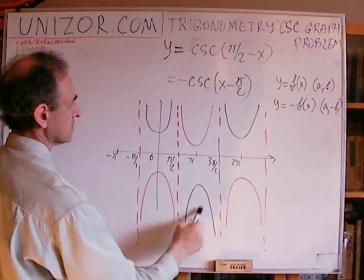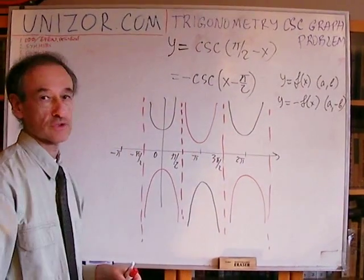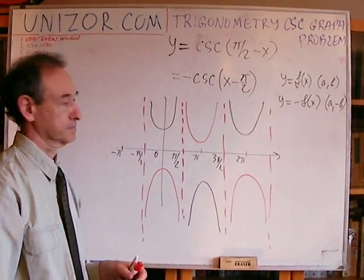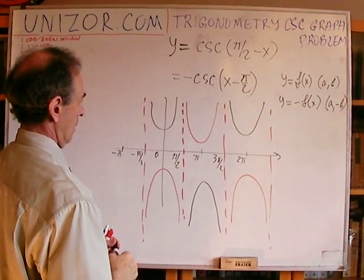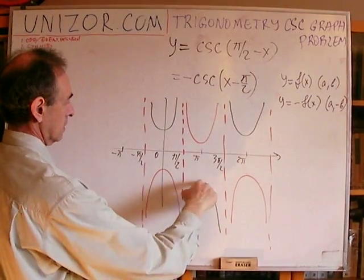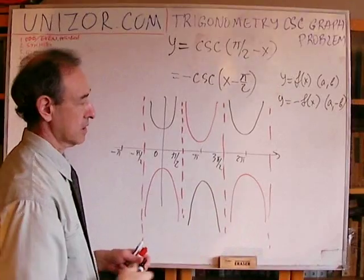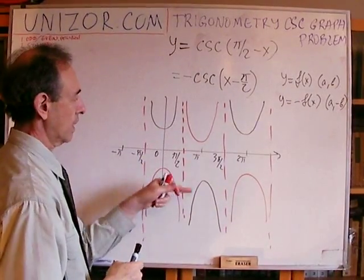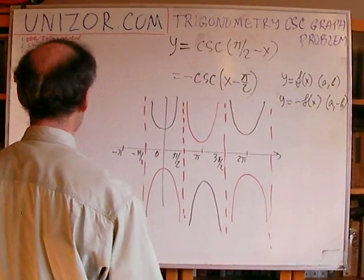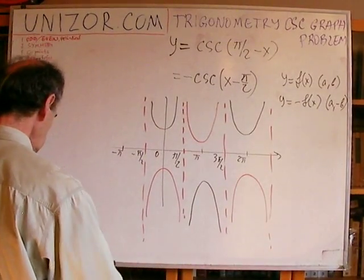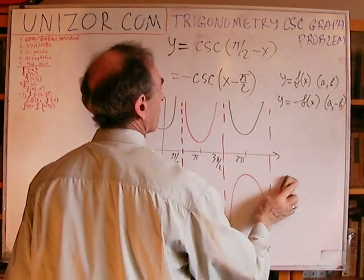The black ones represent the final graph. Local minimum and local maximum remain 1 and minus 1. That's it for cosecant of (π/2 − x).